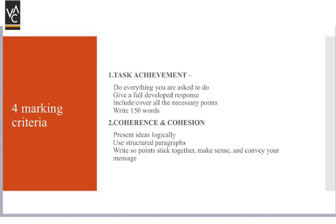Now let's talk about the marking criteria. There are four factors on which you are marked in both writing tasks, applicable to Task 1 and Task 2 in both General and Academic. First is Task Achievement — how much of the task you completed, whether you answered all bullet points according to their requirements, gave a fully developed response, covered all necessary points, and wrote 150 words.